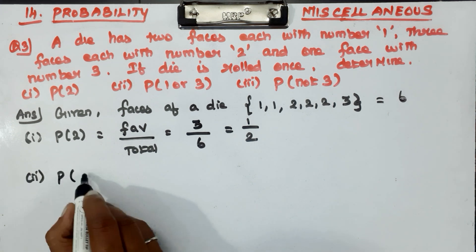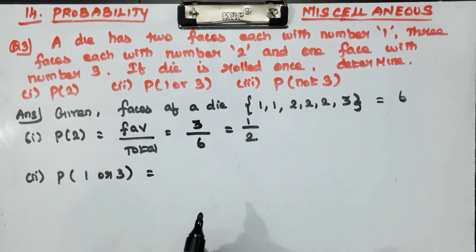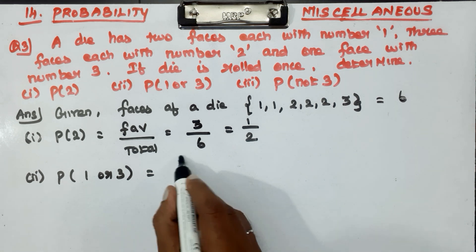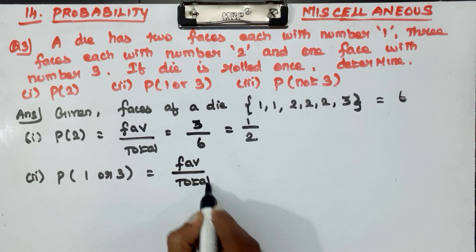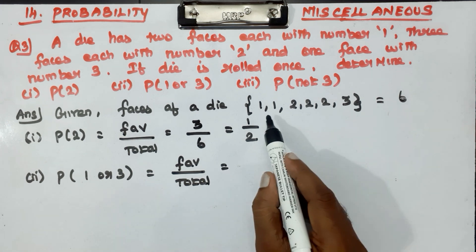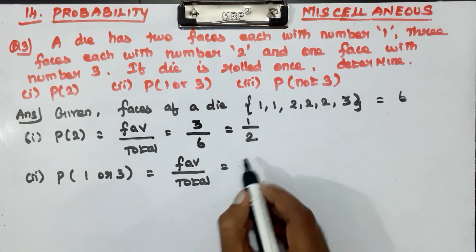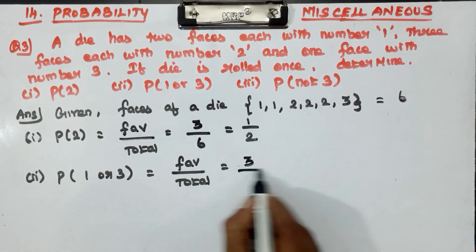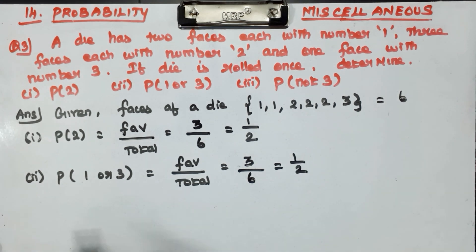The second one, probability of 1 or 3. Or is union. Favorable outcome for 1 or 3: we have 1, 1 and 3, so that's 3 total. 3 by 6 equals 1 by 2.